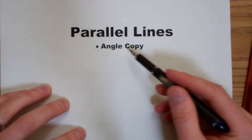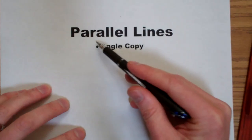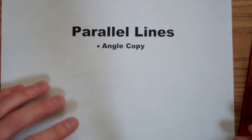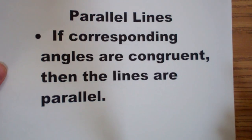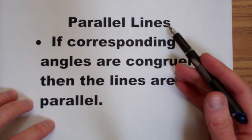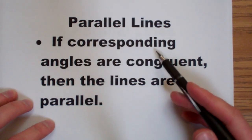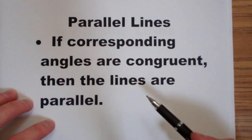In this video, I'm going to use an angle copy to construct parallel lines. Recall that in parallel lines cut by a transversal, if the corresponding angles are congruent, then the lines are parallel.